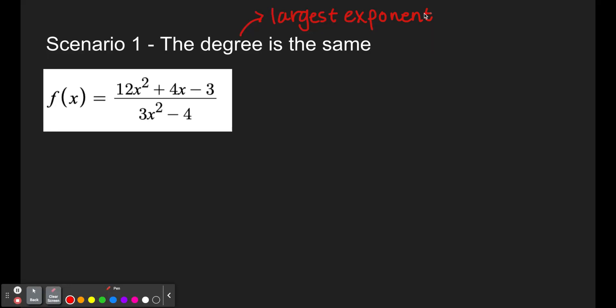The degree in the numerator and the degree in the denominator is the same. So in the numerator, we have 12x squared, 4x, and 3. So 12x squared gives us a degree of 2.